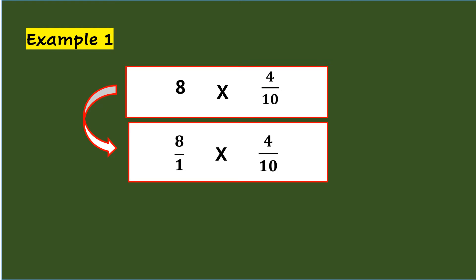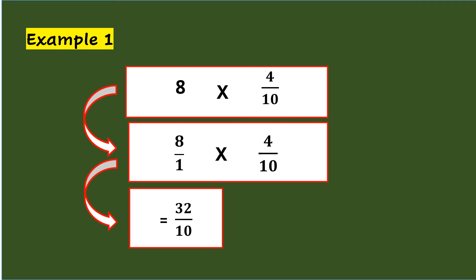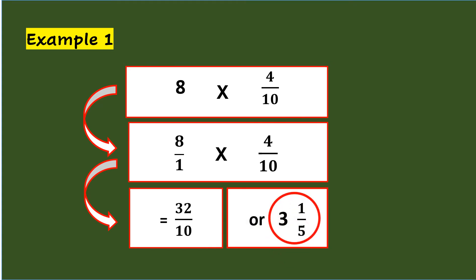So, 8 times 4 tenths will become 8 over 1 times 4 tenths. From here, multiply both numerators: 8 times 4 equals 32. Multiply also both denominators: 1 times 10 equals 10. Therefore, 8 over 1 times 4 tenths equals 32 tenths, or simplified, 3 and 1 fifth.